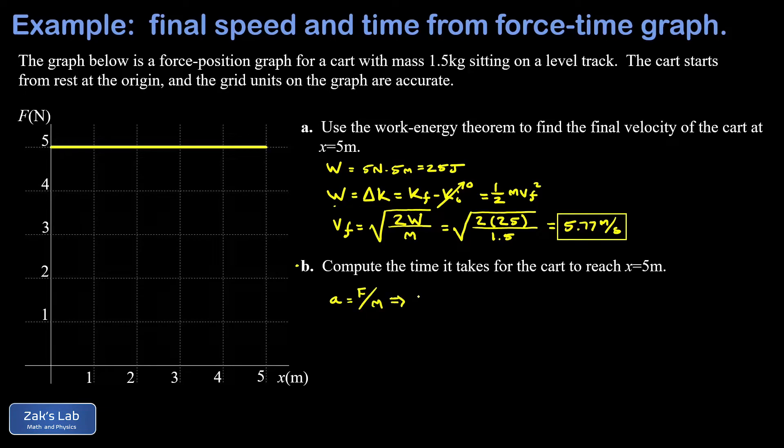If you're used to writing Newton's second law is f equals ma, all I did was solve for a there. This constant force is 5 newtons, the mass was 1.5 kilograms, and we end up with a constant acceleration of 3.33 meters per second squared.